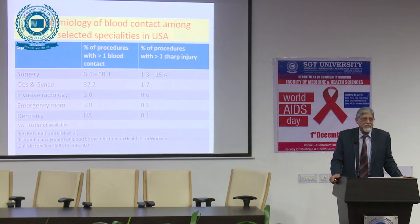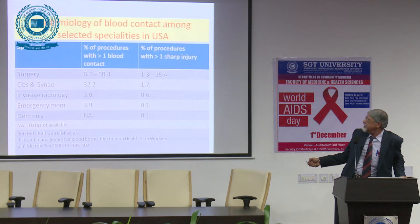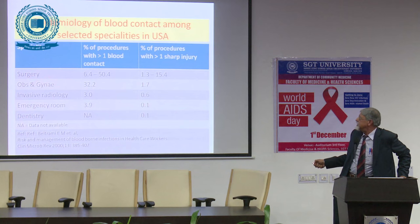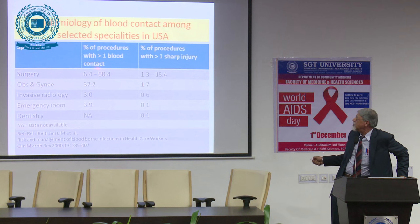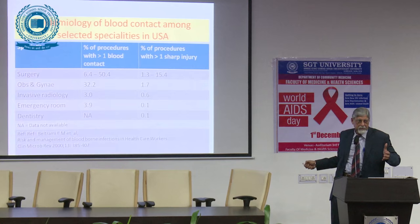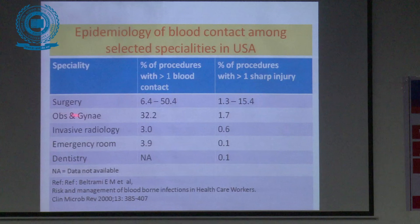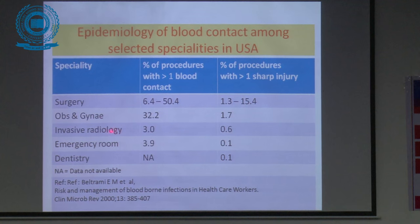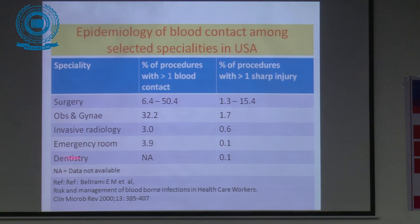Consider the extent of exposure across clinical disciplines: surgery, obstetrics and gynecology, invasive radiology, emergency, and dentistry. In surgery, 6.4 to 50% of procedures involve at least one blood contact, and 1.3 to 15.4% involve at least one sharp injury. Similarly high figures are found in obstetrics and gynecology, with lower rates in invasive radiology, emergency room, and dentistry.